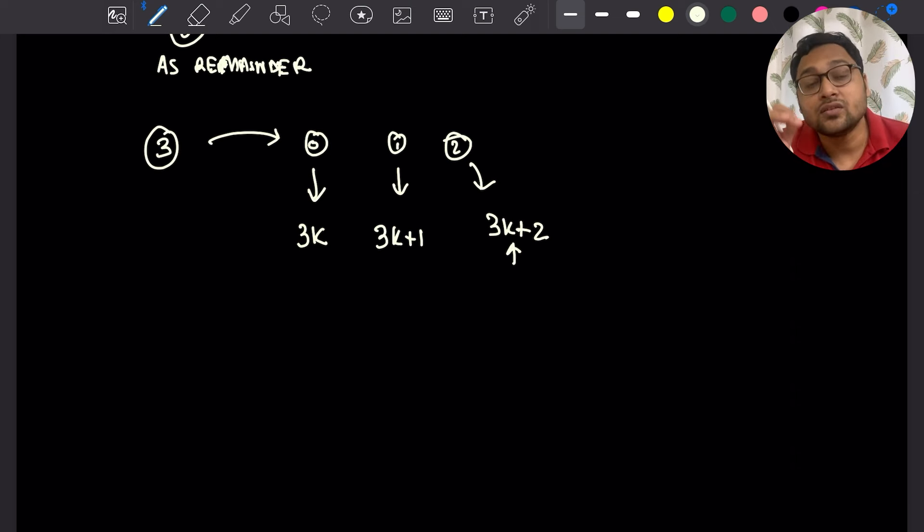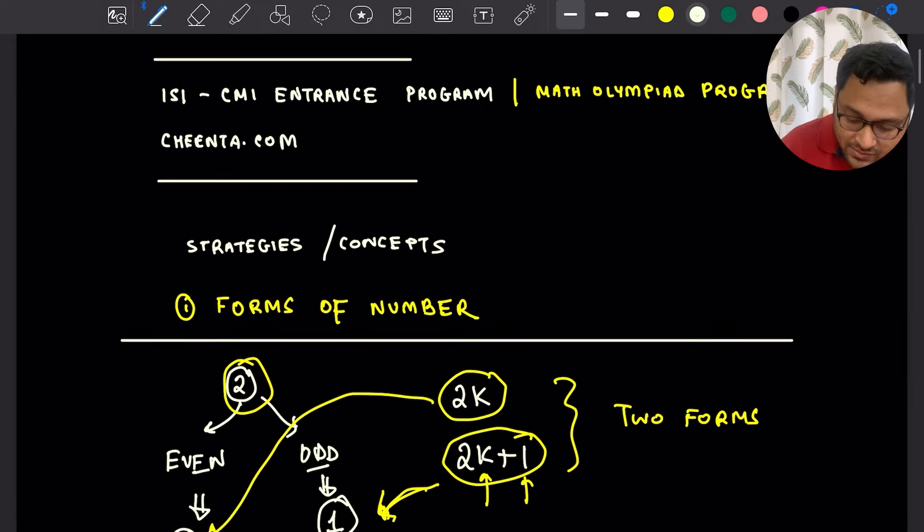It seems that if you write numbers using their forms, oftentimes you get certain beautiful results about all the numbers with that particular form. We will see an example in this American Math Competition problem. By the way, these concepts are discussed in detail with a lot of example problems in our Math Olympiad programs. Now let's come back to this problem.